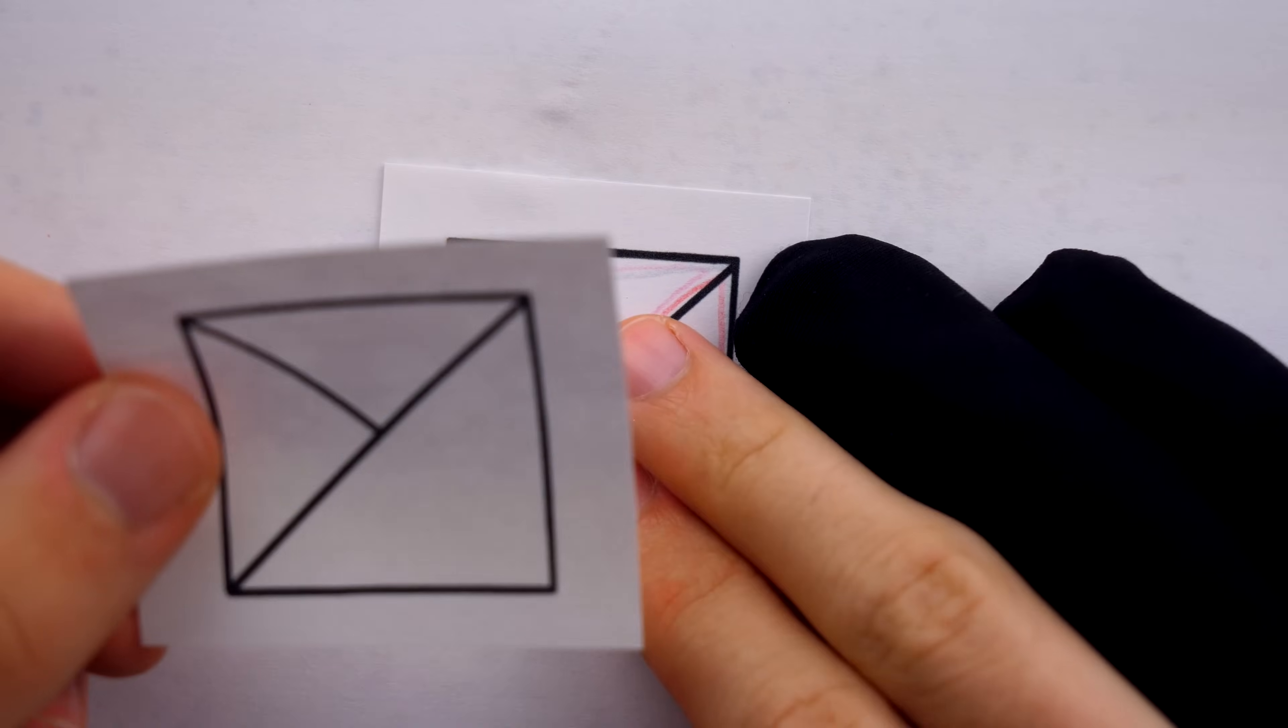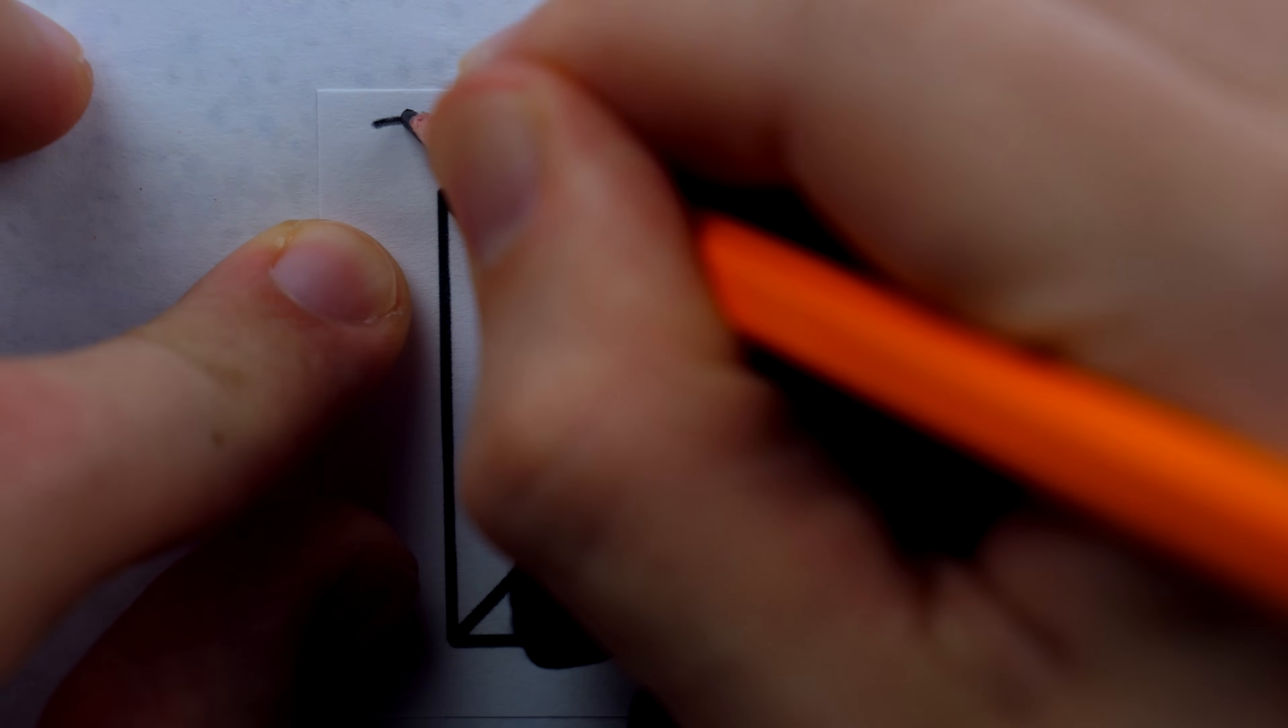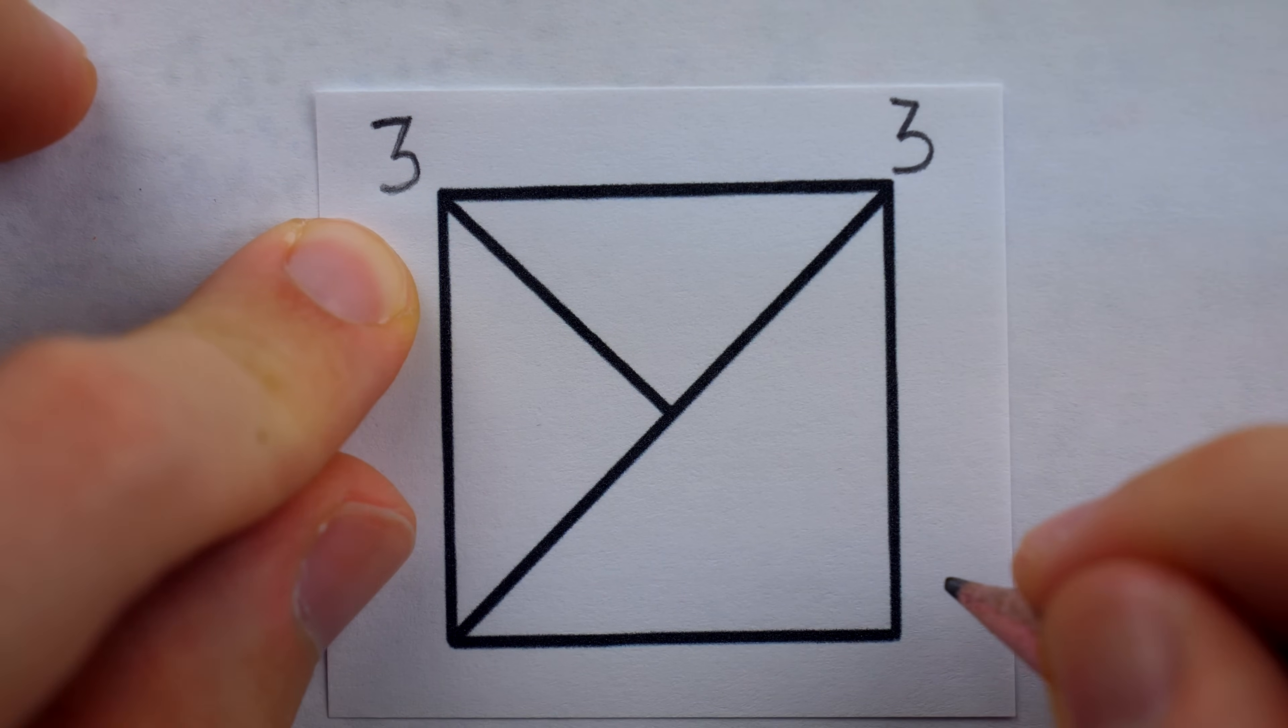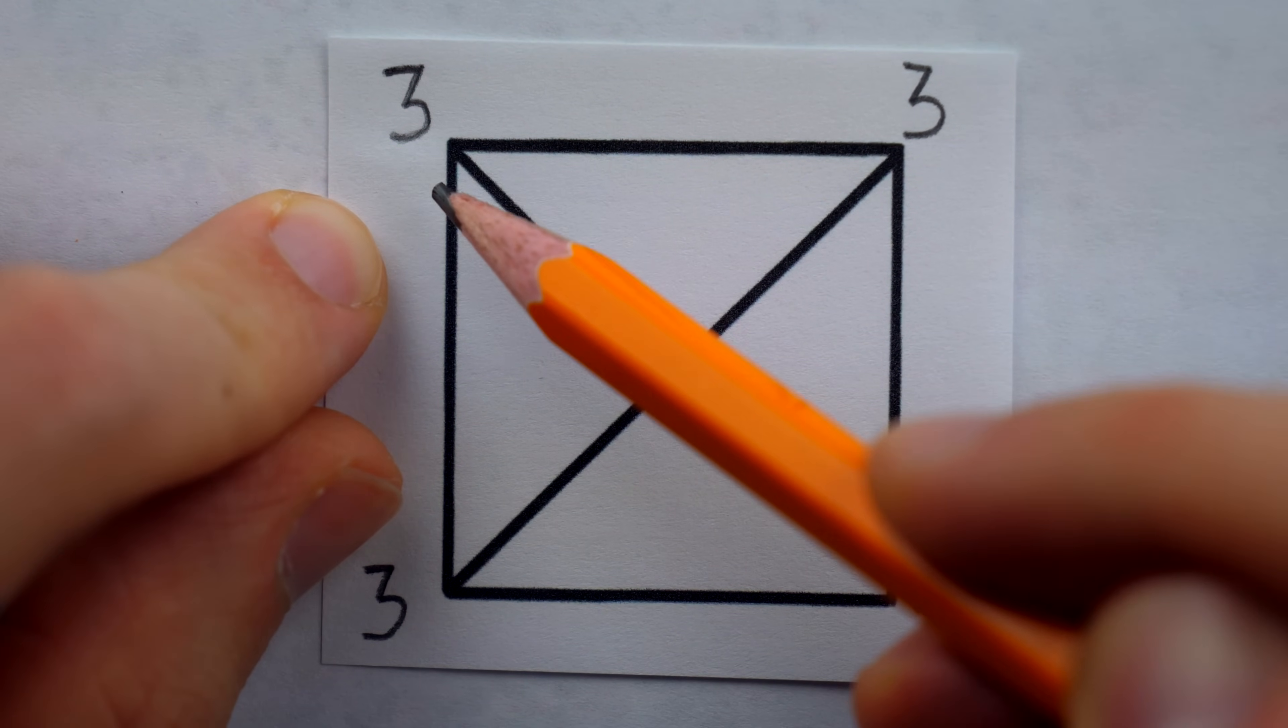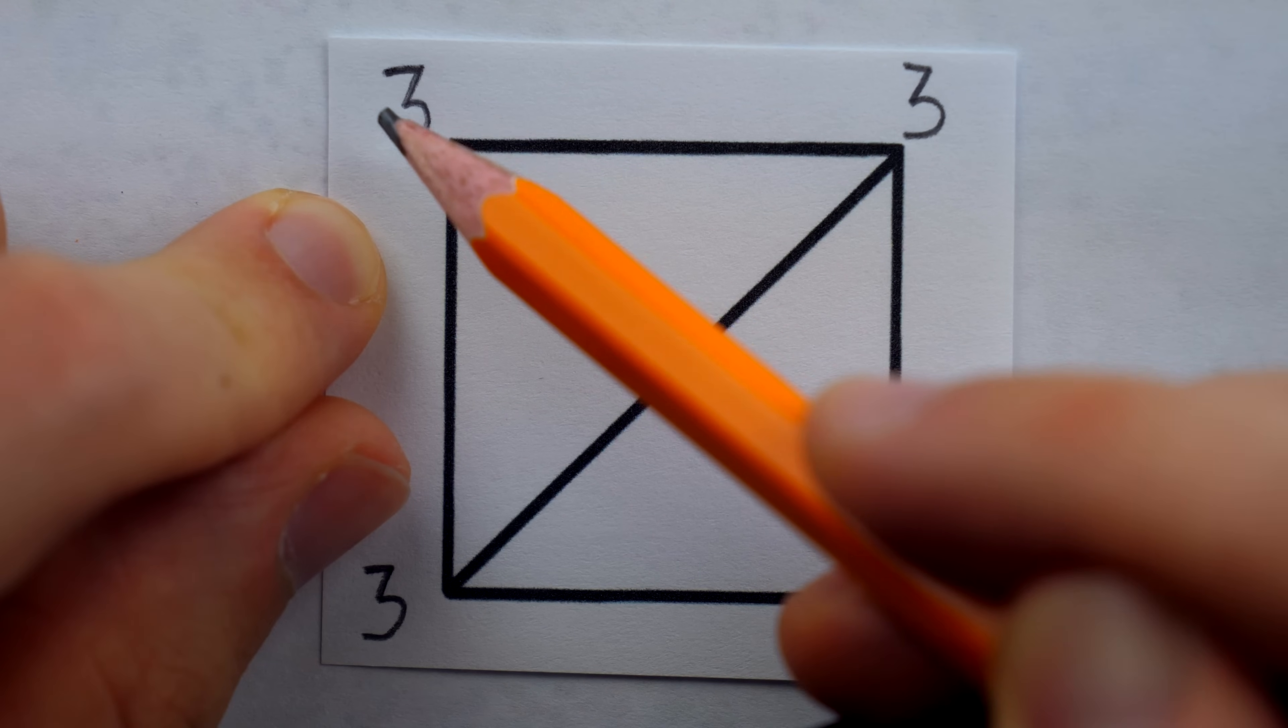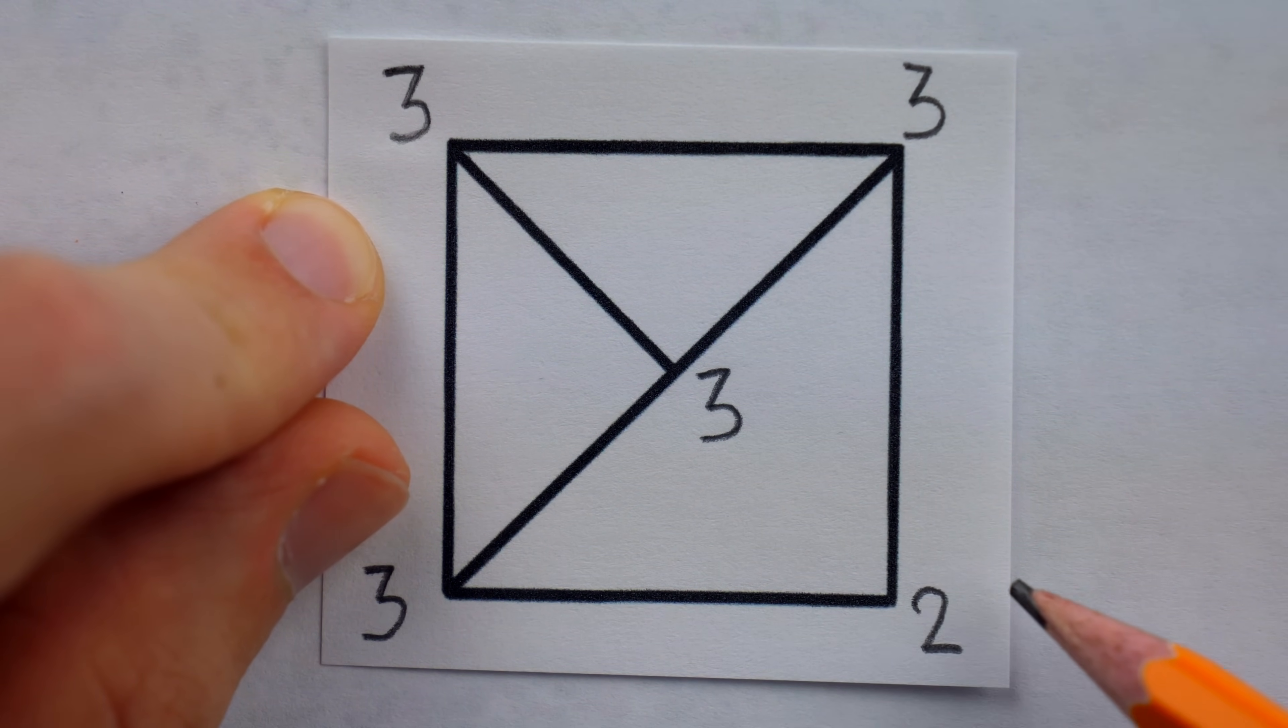If you've never encountered a problem like this in the context of mathematics, you may be unsure how one could even prove this is impossible without actually checking every single way we could trace the figure. But the problem turns out to be pretty simple when we just focus on the structure. Right now, I'm labeling each point of intersection with the number of line segments that touch it. This is called the degree of the point.